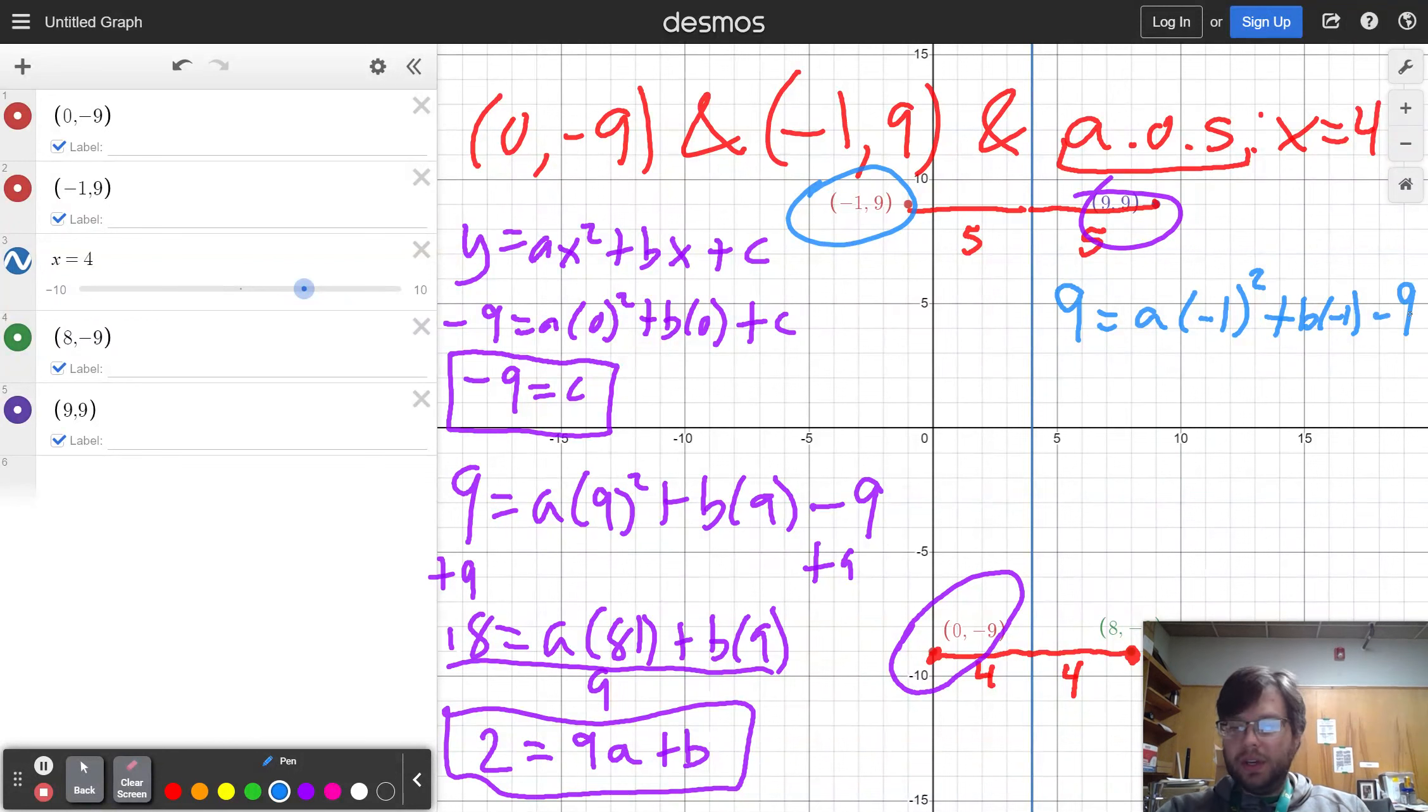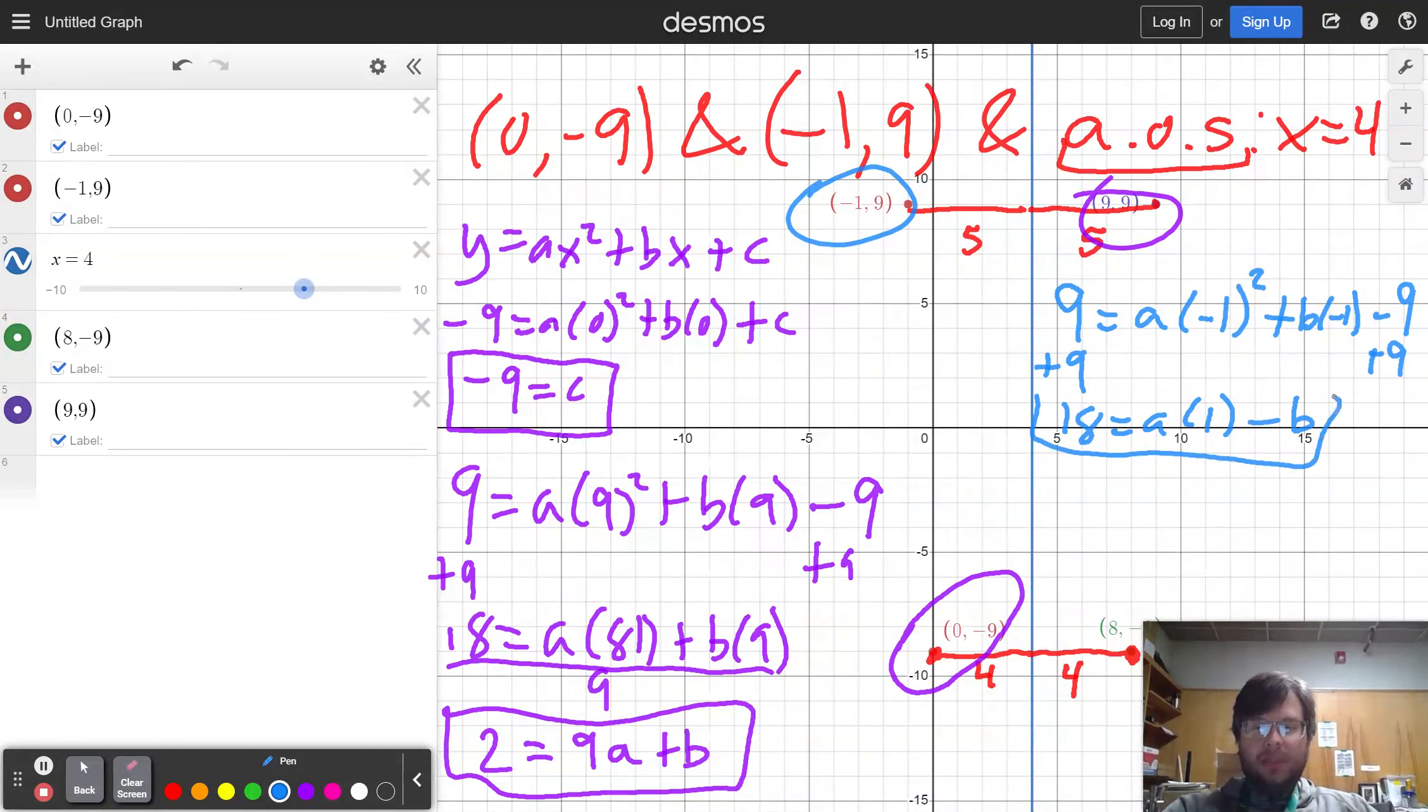Because remember, my c is still equal to negative 9. I'm going to proceed basically the same way I did before. So I have 18 equals a times 1 minus b or a minus b. So now I can grab this equation and bring this one right here.